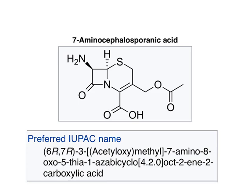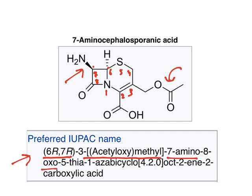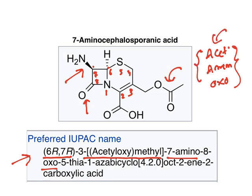When you look at 7-aminocephalosporanic acid, the numbering shows two stereocenters at positions six and seven. At the third position, an acetyloxymethyl group is present. At the seventh position, an amino group is present, and at the eighth position an oxo group is there. These substituents — acetyloxy, amino, and oxo — are arranged in alphabetical order. The ring is 5-thia-1-azabicyclo[4.2.0]oct-2-ene, and at the second position the functional group carboxylic acid is present.